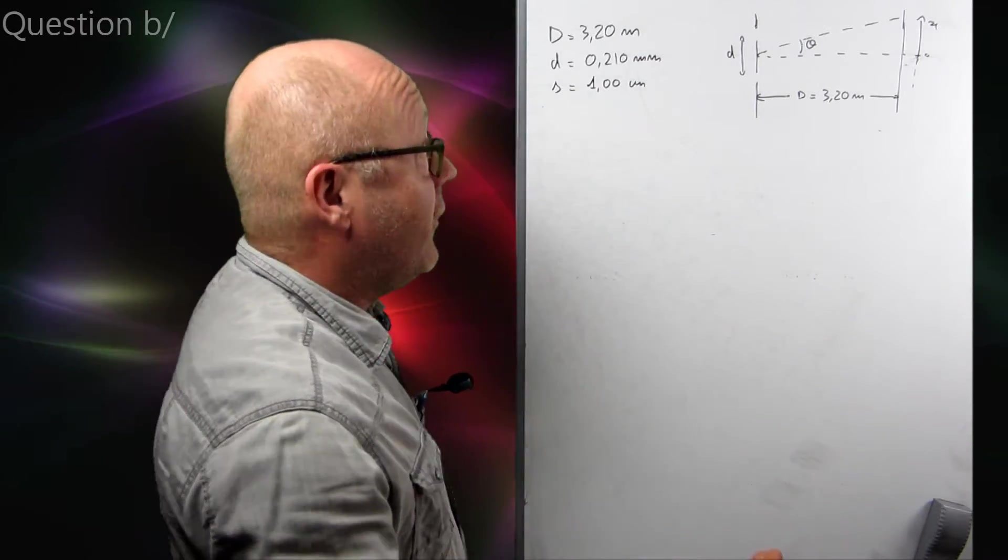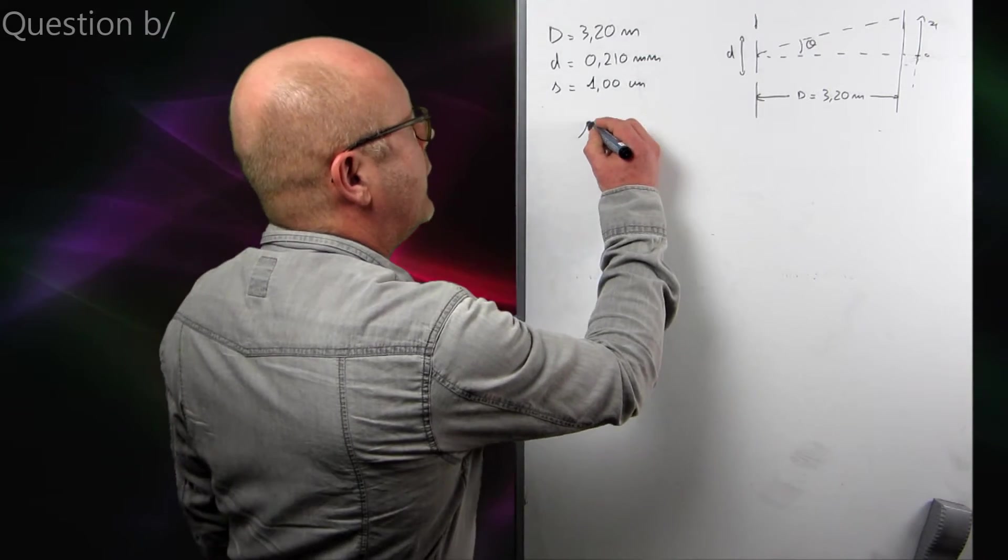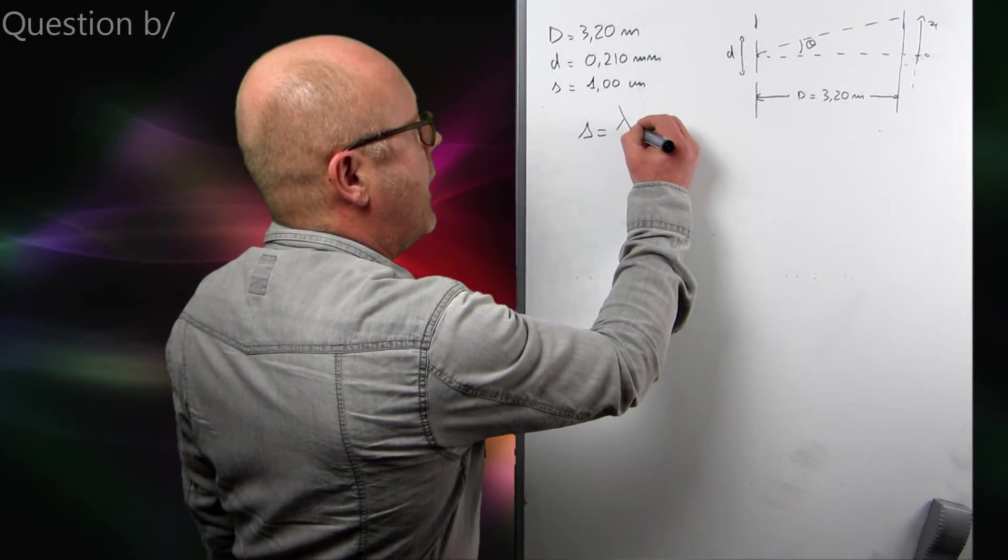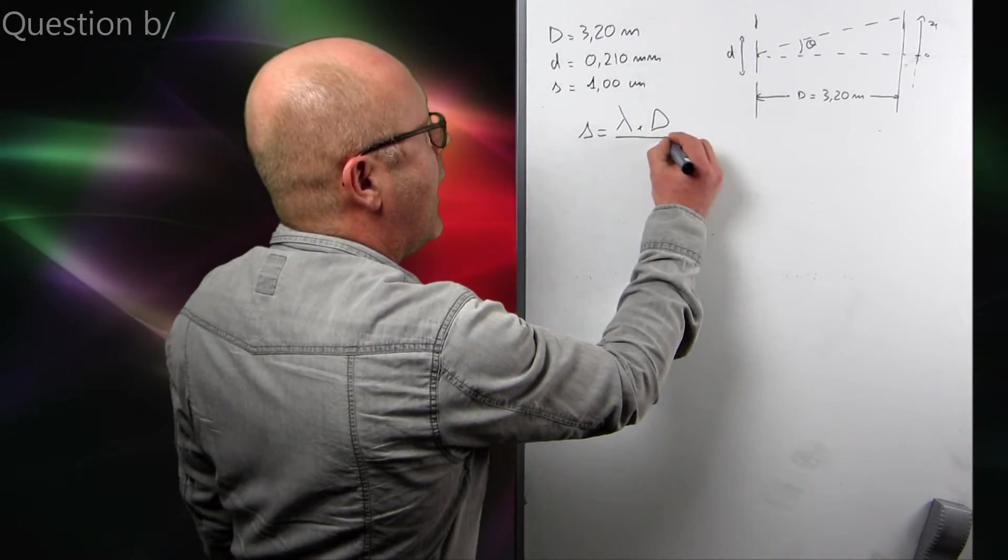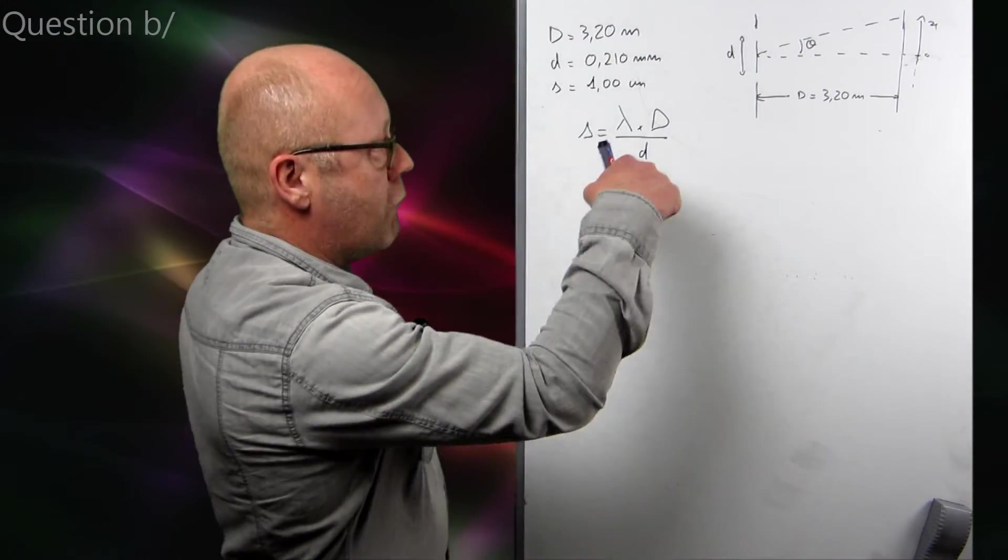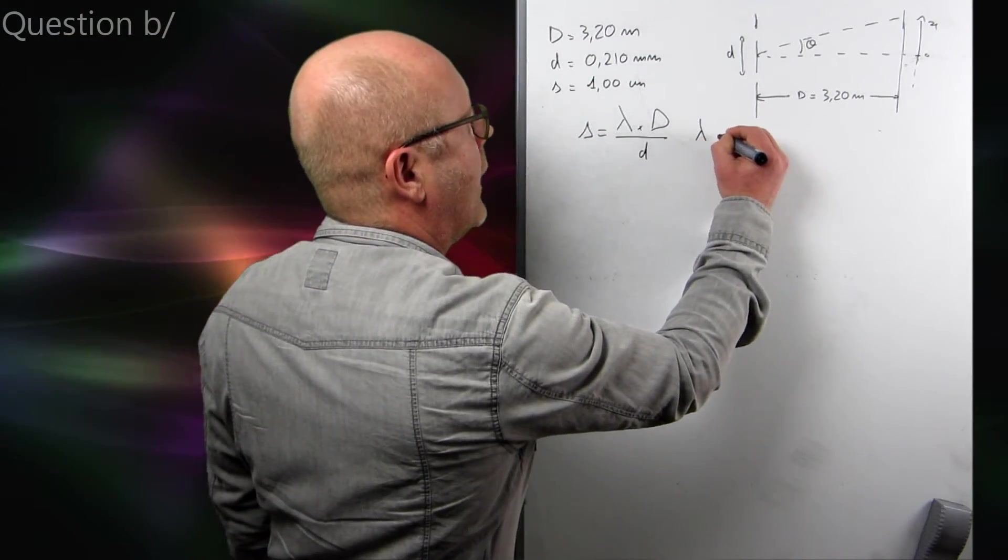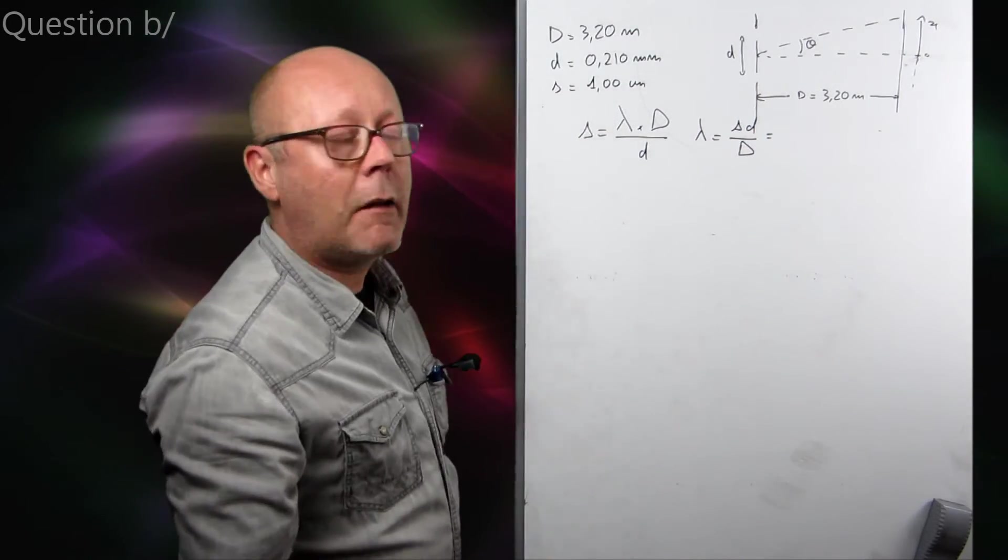So, you can just use the formula for the double slit. The distance between the fringe is equal to the wavelength multiplied by the distance between the screen and the slits and divided by the distance between the slits. You can rearrange this to get lambda.